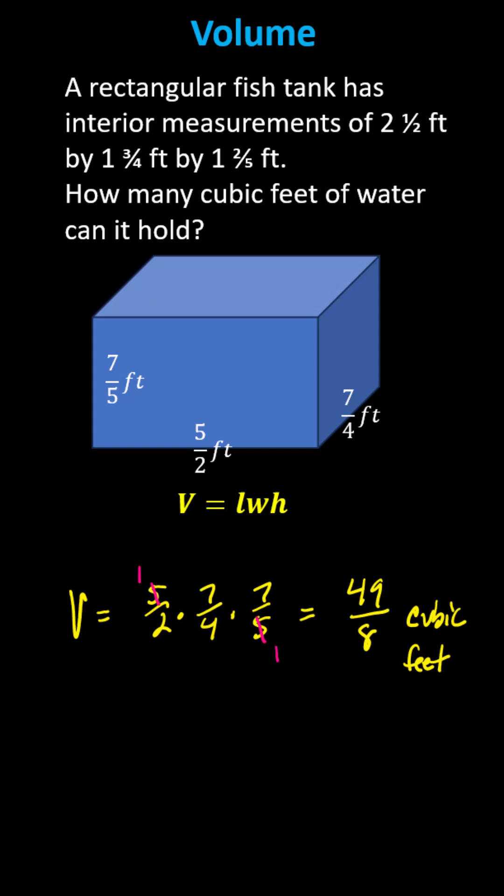But let's also give the volume as a mixed number. To do this we'll divide forty-nine by eight. There are six eighths in forty-nine, six times eight is forty-eight. Subtracting we have a remainder of one, so we can also express the volume as six and one eighth cubic feet.